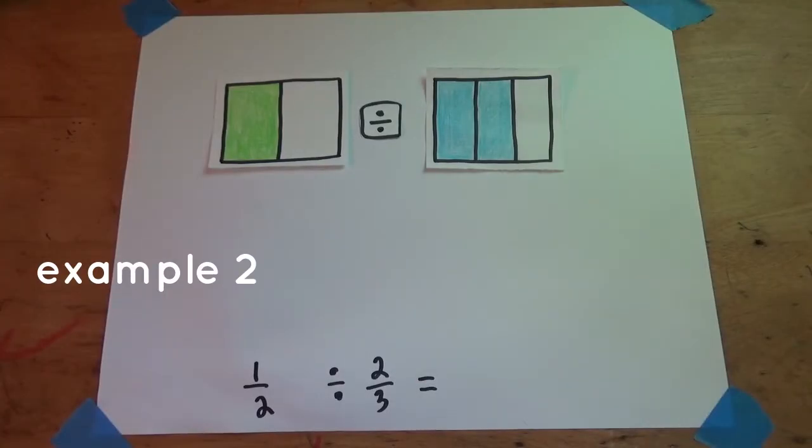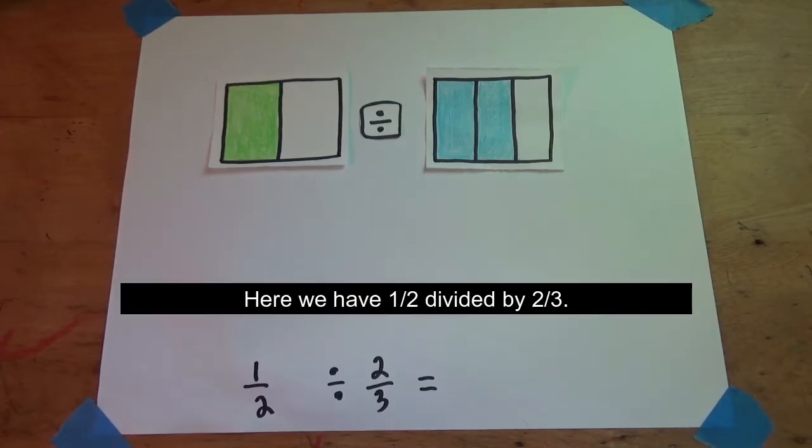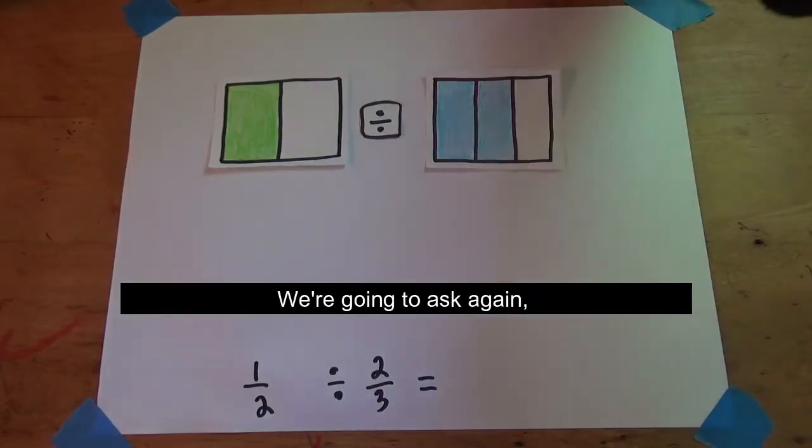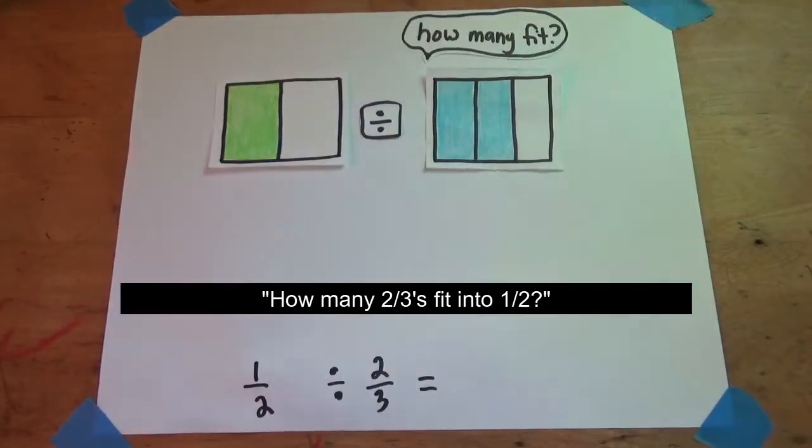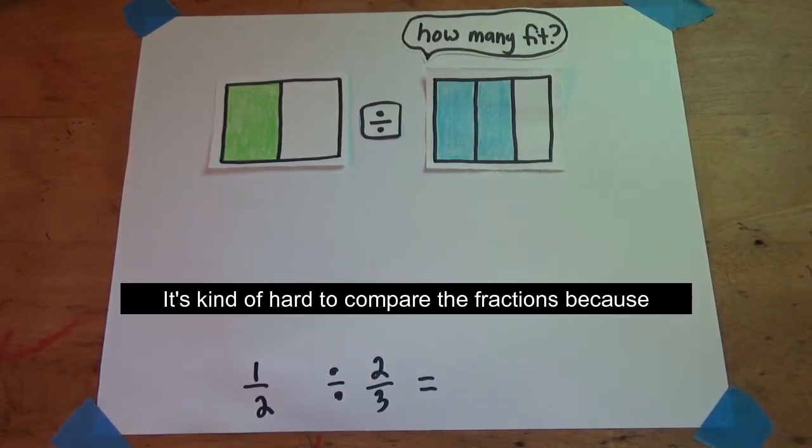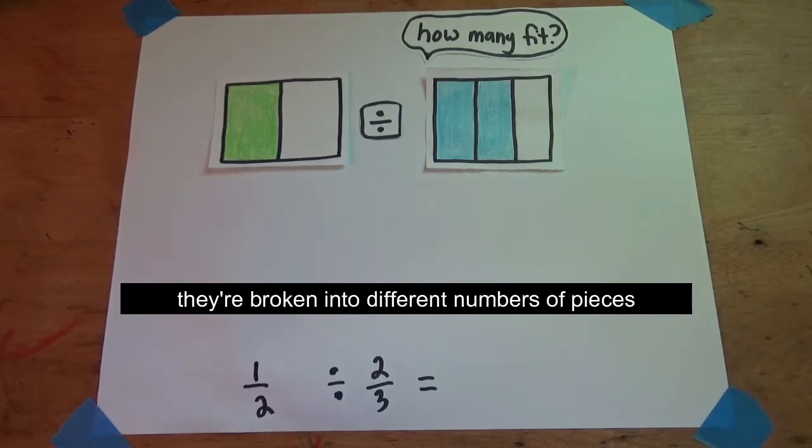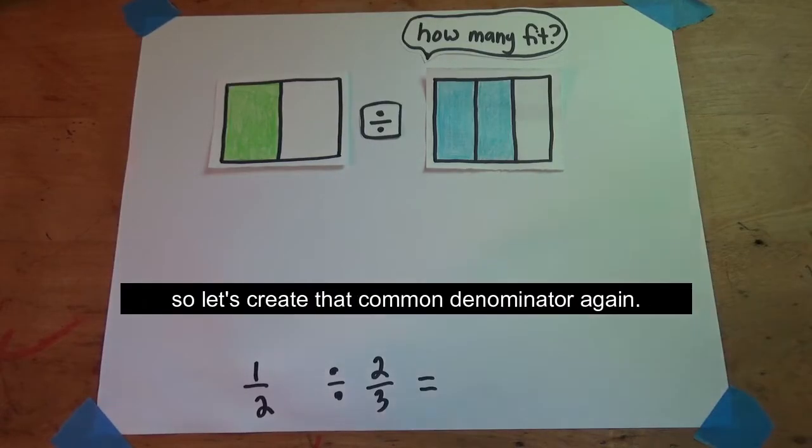Here's our second example. This time we're just going to flip the fractions, so we have one-half divided by two-thirds. We're going to ask again, how many two-thirds fit into one-half? It's kind of hard to compare the fractions because they're broken into different numbers of pieces, so let's create that common denominator again.